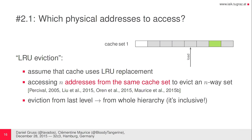The next question: which physical addresses do we need to access? We call this LRU eviction, because it assumes the cache uses an LRU replacement policy. We access N addresses from the same cache set to evict an N-way set. This is also known in the field as Prime+Probe. We also exploit the inclusive property of the last-level cache: evicting a line from the LLC evicts it from the whole hierarchy, so we just need to evict from the last-level cache.